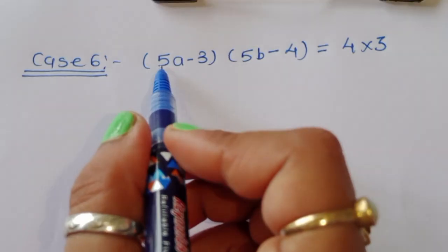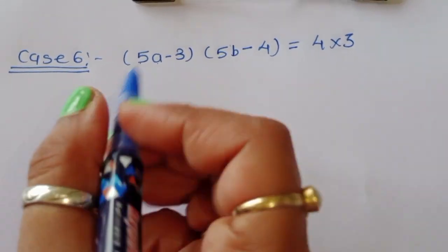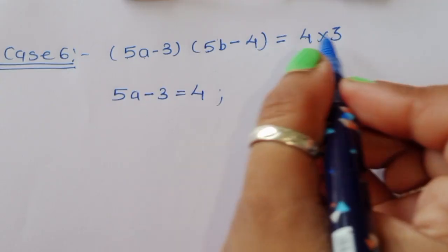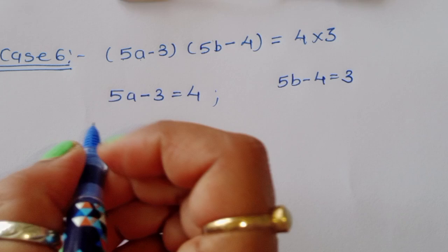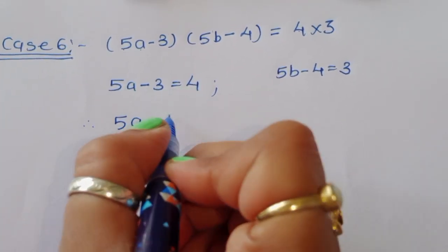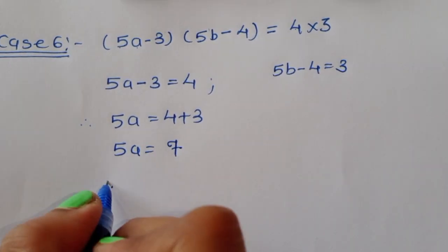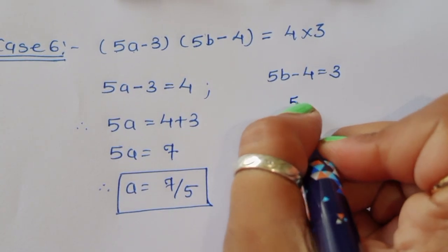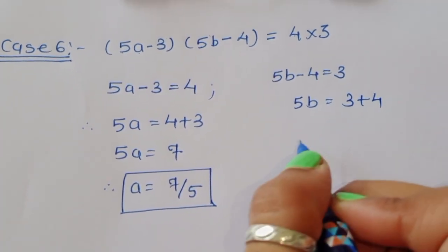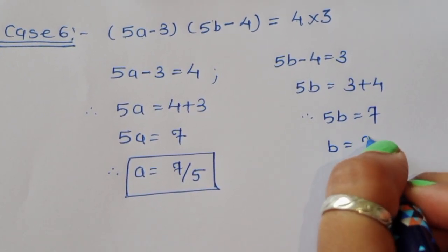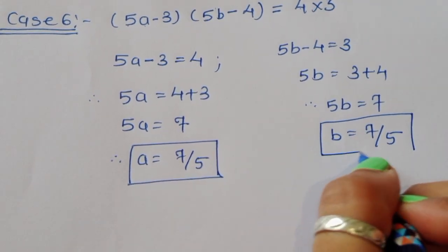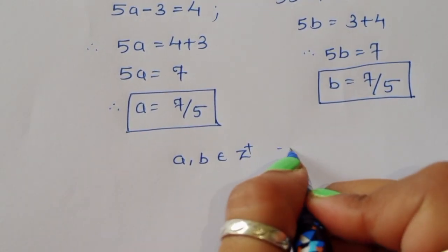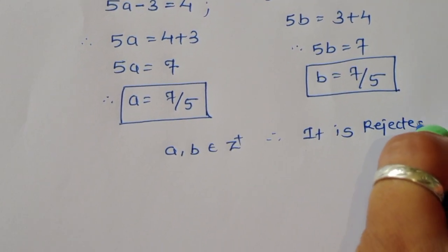Case 6: (5a-3)(5b-4) = 4×3. So 5a-3=4 gives a=7/5, and 5b-4=3 gives b=7/5. Since ab belongs to integers and these are not integers, Case 6 is also rejected.